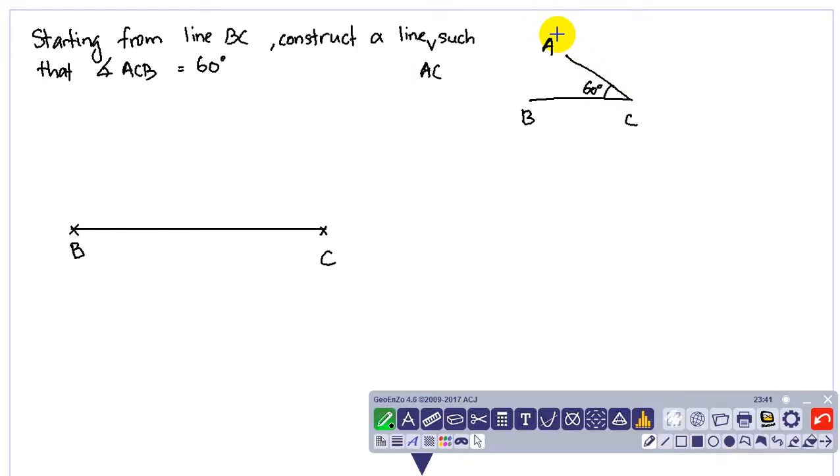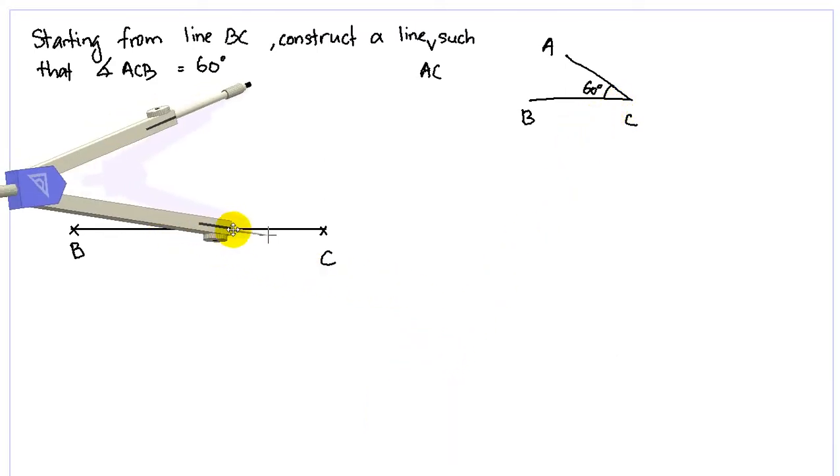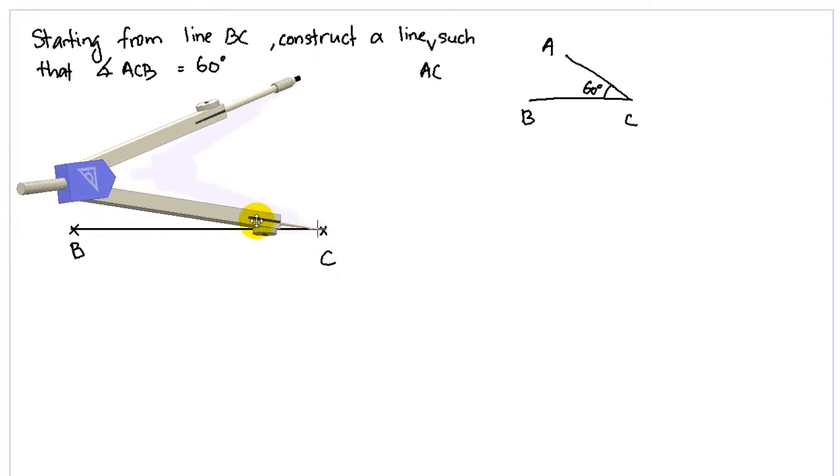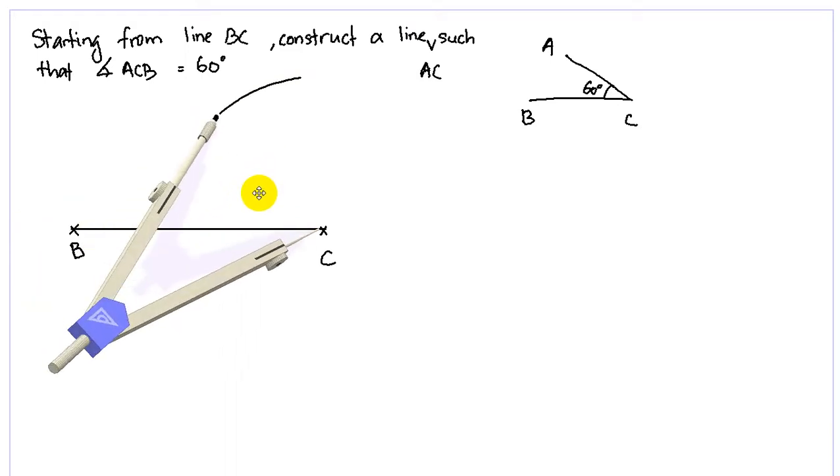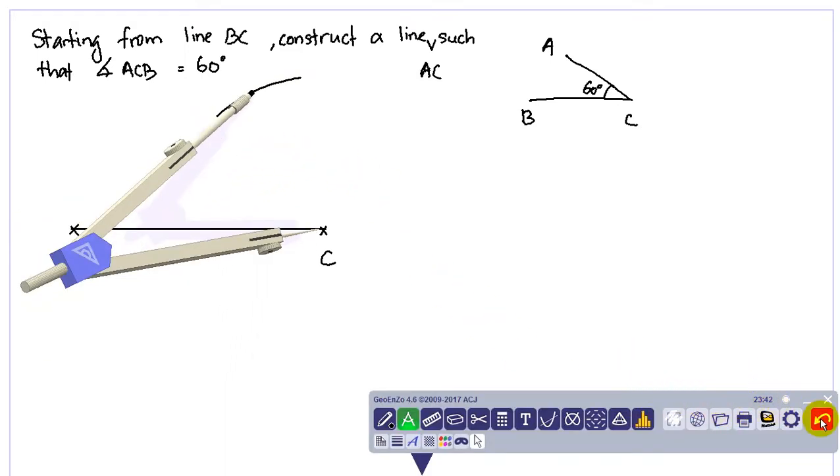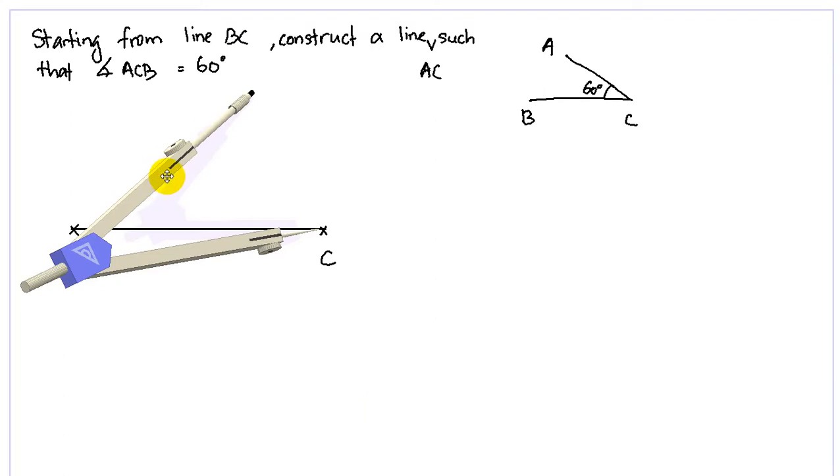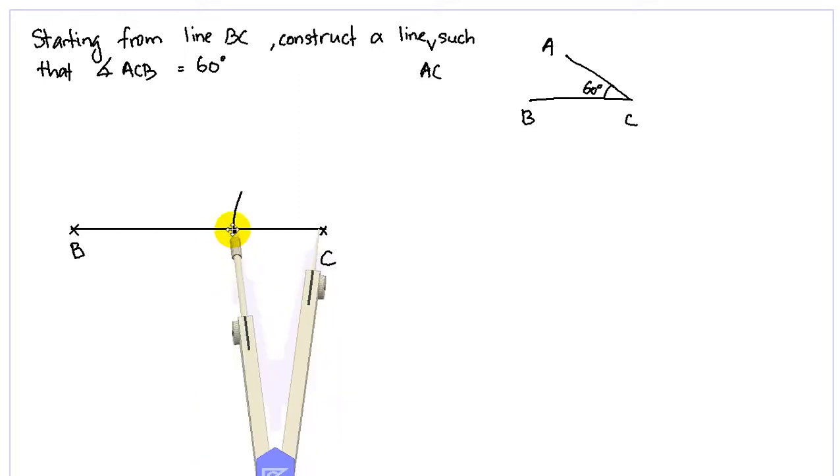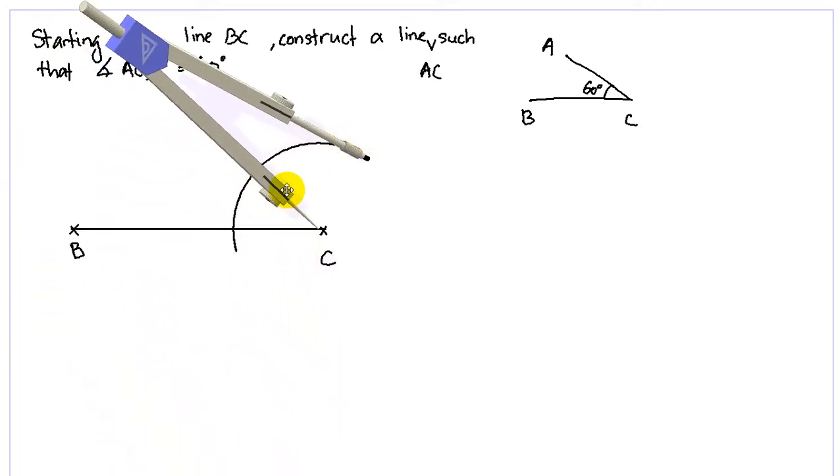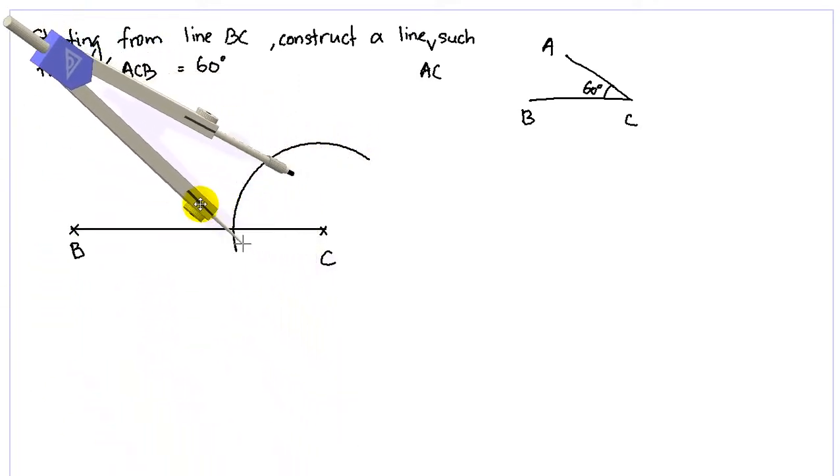So how do we construct this angle? It's the same thing. Take our compass. Since now I want my angle at point C here, you don't have to measure the length - any length is okay. Make an arc. So move it over here, place at C here, make an arc.